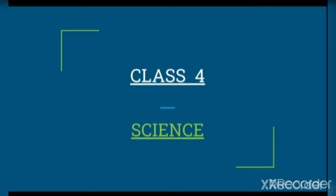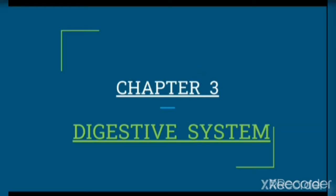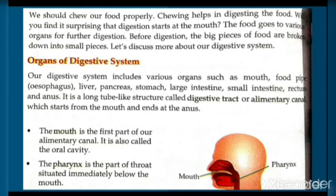Hello students, today we are going to start Science Chapter 3: Digestive System. We should chew our food properly — chewing helps in digesting the food. Will you find it surprising that digestion starts at the mouth? The food goes to various organs for further digestion. Before digestion, the big pieces of food are broken down into small pieces.